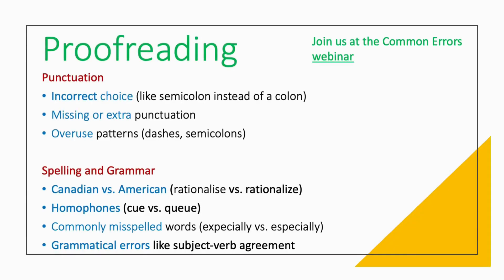Proofreading is getting in there with a magnifying glass and really identifying errors that are very small, that may seem minor but could be very visually distracting to your instructor — things like punctuation errors, spelling and grammatical errors, mechanical errors, and documentation errors. We have a common errors webinar that runs throughout the year, so please take a look at the webinar schedule. In terms of punctuation, typical errors can include using a semicolon instead of a colon, having a comma where a comma shouldn't be, missing or extra punctuation, or an overuse pattern like too many dashes or semicolons.